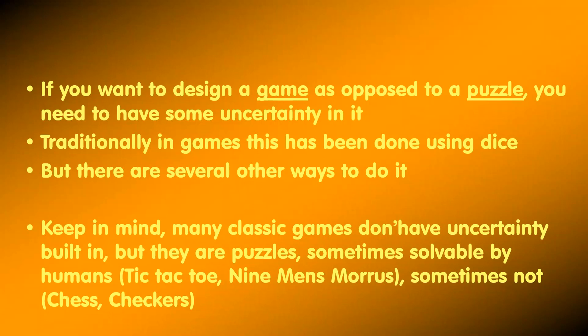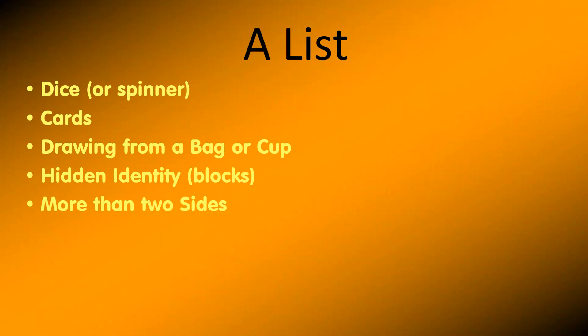Keep in mind, many classic games don't have uncertainty built in — but they are puzzles, sometimes solvable by humans, for example tic-tac-toe or nine-man's morris, and sometimes not solvable by humans, as in chess and checkers. Here is a list of the five ways, and I'll describe each in turn.